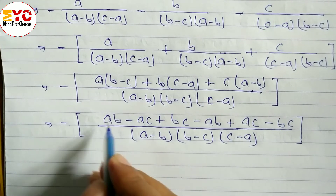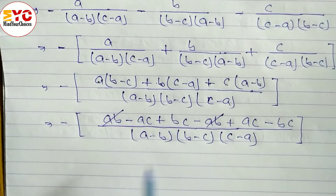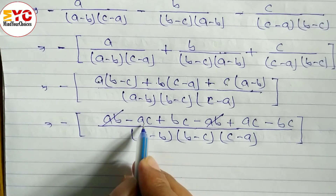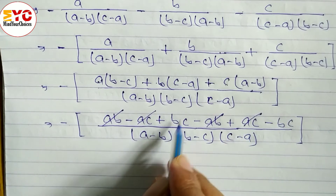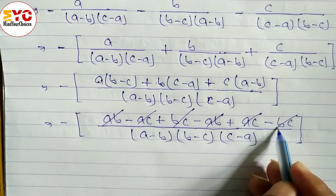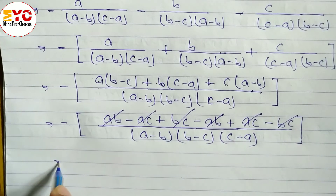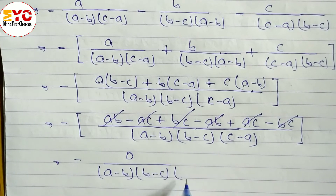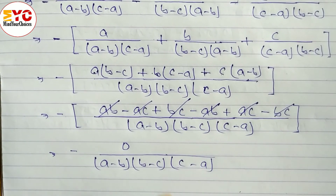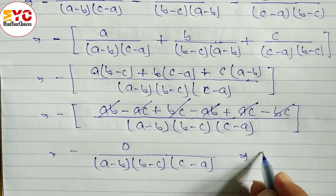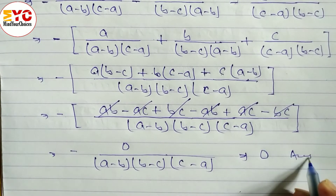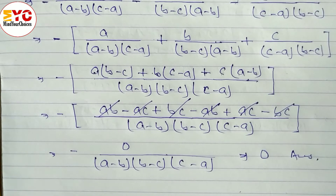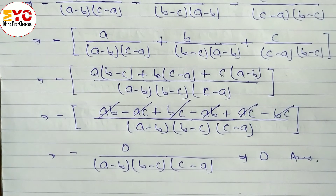Now cancelling: ab positive and ab negative cancel. Negative ac and positive ac cancel. Positive bc and negative bc cancel. Nothing remains, so the numerator is 0. Zero divided by any number is 0, so the answer of this simplification is 0.